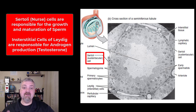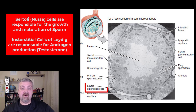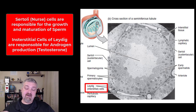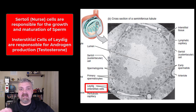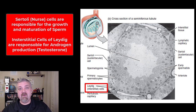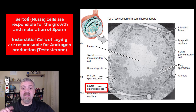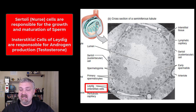Sertoli cells or nurse cells are the terms I use. Then we also have at the bottom the interstitial cells, or as they were called when I was in school, the interstitial cells of Leydig. These are the cells that produce the androgens — your male sex hormones — primarily testosterone. There are other ones like dihydrotestosterone, but testosterone is the primary androgen. We need testosterone to keep the reproductive system functioning, and we need sperm.